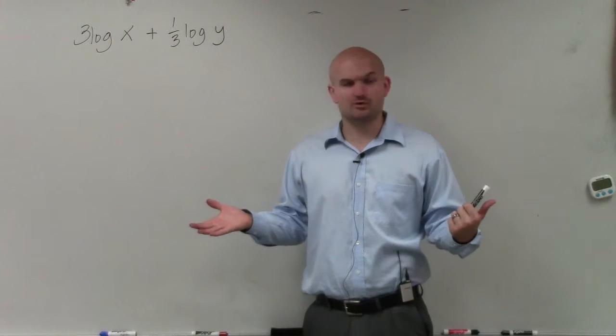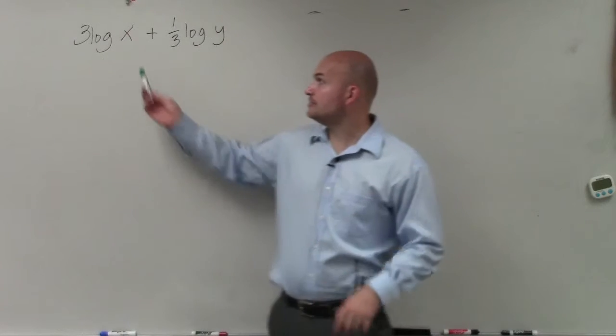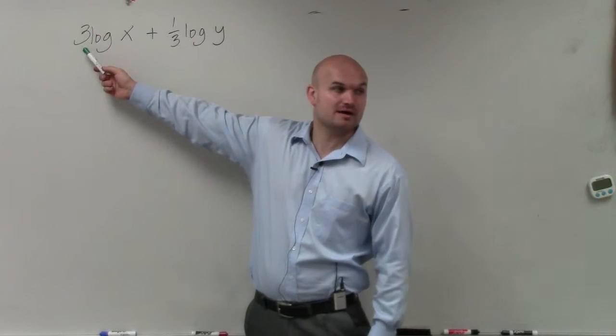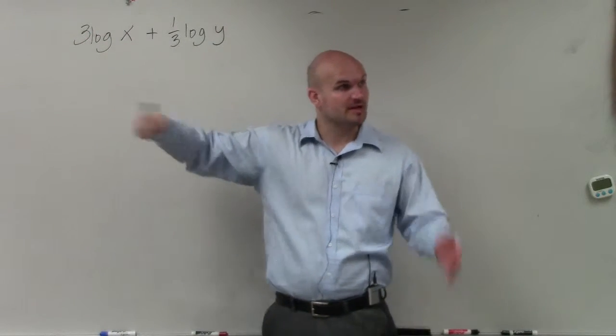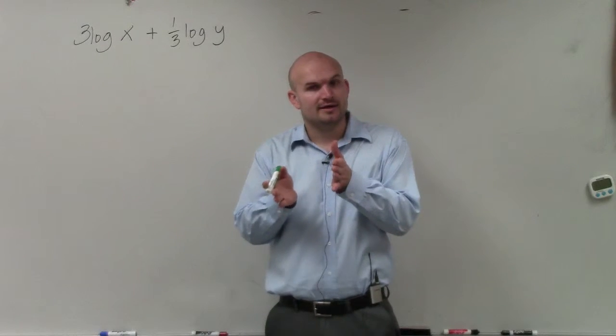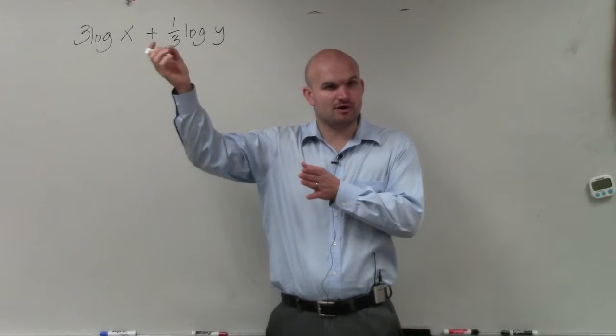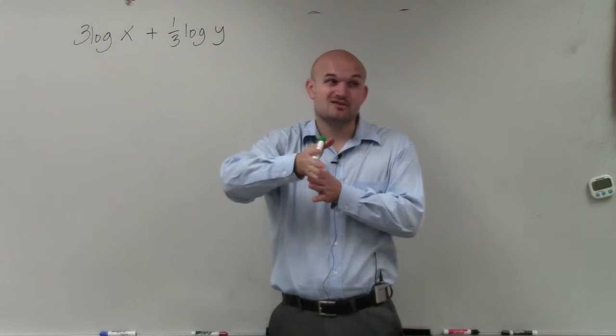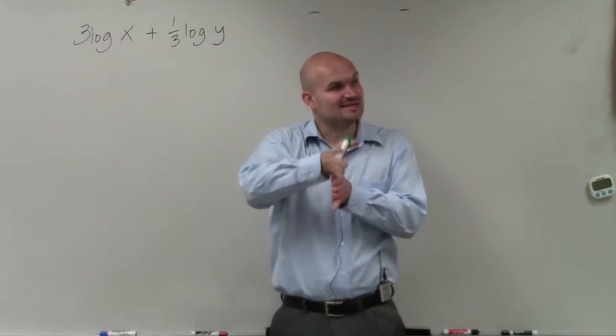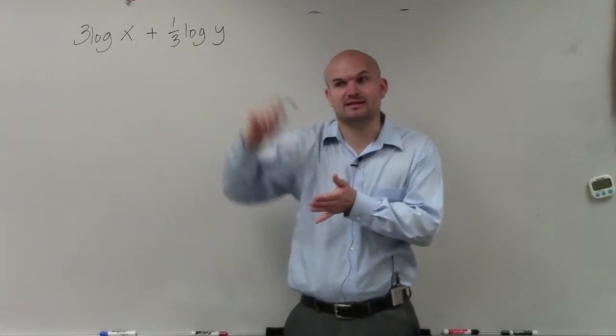So we're going to use the same rules that we have already done. You can see that I have some numbers being multiplied by my logarithm, which I remember from the power rule, if we had an exponent or a power, we put that number in front, right? So I just want to kind of undo that now. So anytime I have a number in front, I now want to rewrite that as a power.